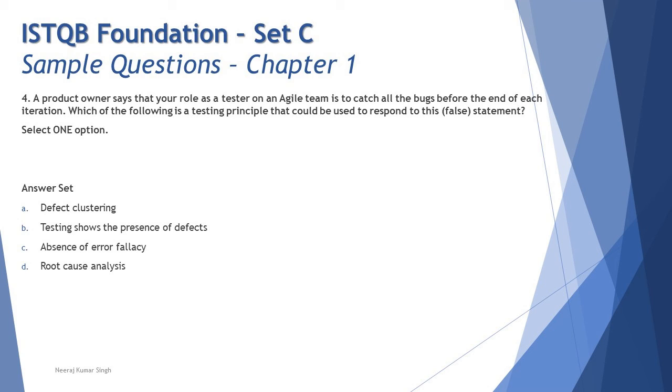The product owner says that your role as a tester on the agile team is to catch all the bugs before the end of each iteration. There is a keyword here: all the bugs. That's something which is not possible because we have a principle saying that testing shows presence of defects but does not prove absence of defect. No matter how much testing you would have performed, at any point you cannot say that you found all the bugs because if you go on testing you would find more bugs. For more details watch the principle in the tutorial, you'll get the detailed justification that why this principle says not all the defects.